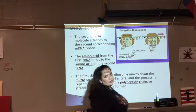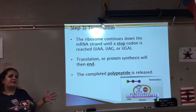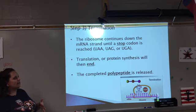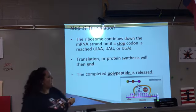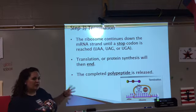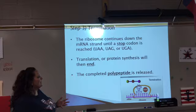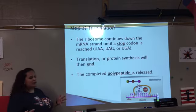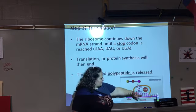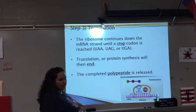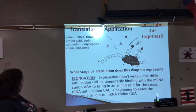Step three is termination. The ribosome continues moving down the mRNA strand until it reaches a stop codon. There are three stop codons you need to know: UAA, UAG, and UGA. When you look those up on your codon wheel, it will say stop, telling you that translation is done and protein synthesis is finished. At that point, the completed polypeptide is released. For example, when the ribosome reaches UGA, it releases the amino acid chain — the polypeptide.